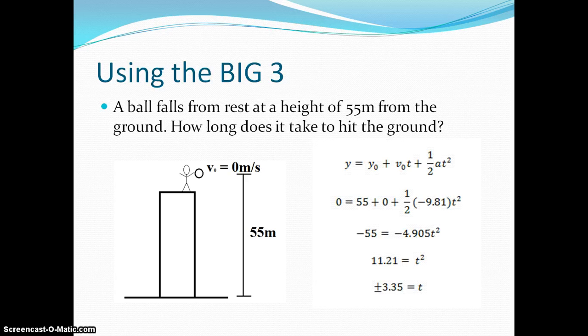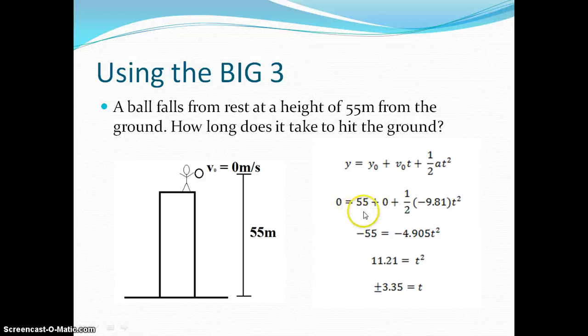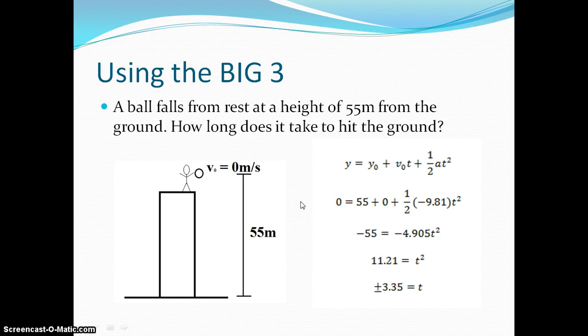So we're going to use kinematic equation number 2: y equals y-naught plus v-naught t plus one-half at squared. We have, right here, final position of 0, initial position of 55. The initial velocity was 0, so the v-naught t cancels out, the one-half negative 9.81 t-squared. The acceleration is negative because it's directed downwards.